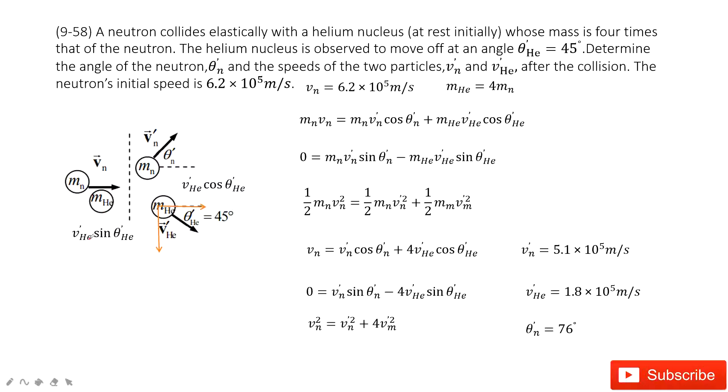And then initially, we have the velocity only for the neutron. This one is given. And the mass ratio is also given. And finally, there is an elastic collision that happens.